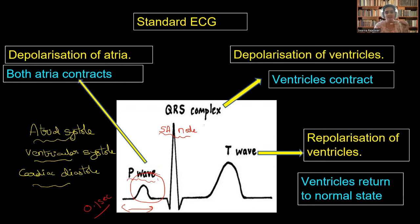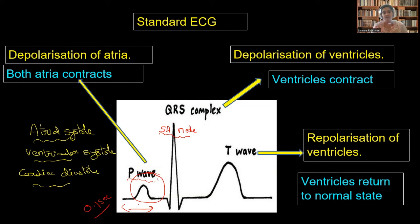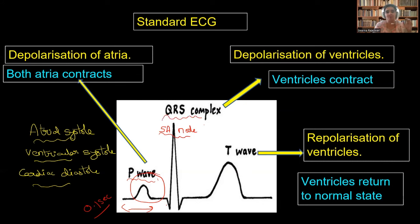After the atrial systole ends, the AV valves open and start sending the blood from the atria to the ventricles. Now the ventricle starts contraction. The beginning of the ventricular systole and all the things taking place in it are represented by a complex called the QRS complex.